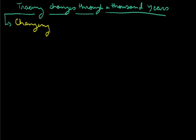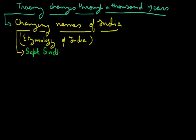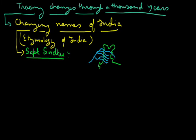In the second part, we discuss the changing names of India — or we can say, the etymology of India. Etymology means the origin of a word. 'Sapt Sindhu' is one of the names of India. As you can see on the present map of India, there are major rivers: the Indus, Jhelum, Chenab, Ravi, Beas, and Sutlej — these five rivers, plus the Indus as the sixth, and the Eloni river as the seventh. So this whole region of seven rivers is known as Sapt Sindhu.